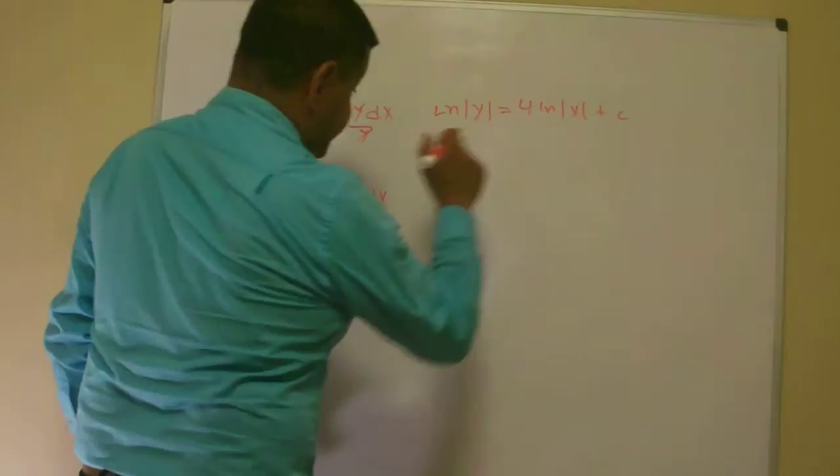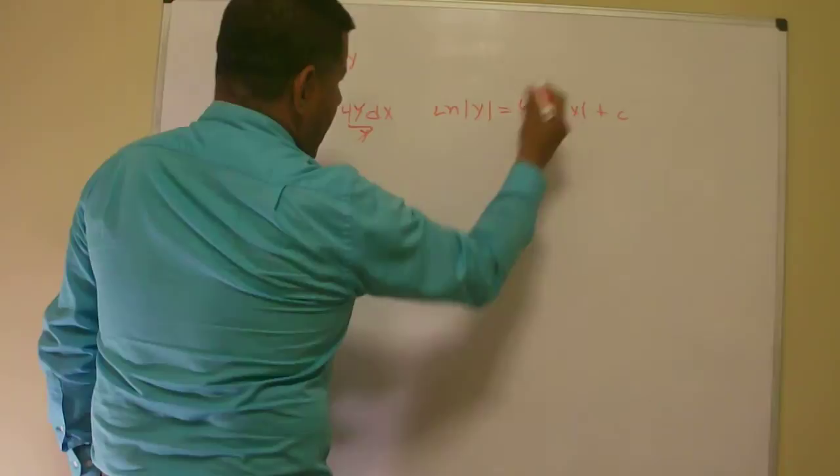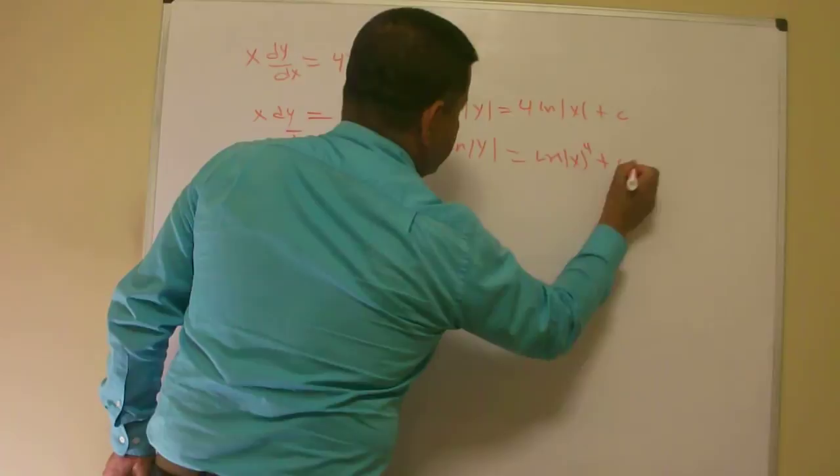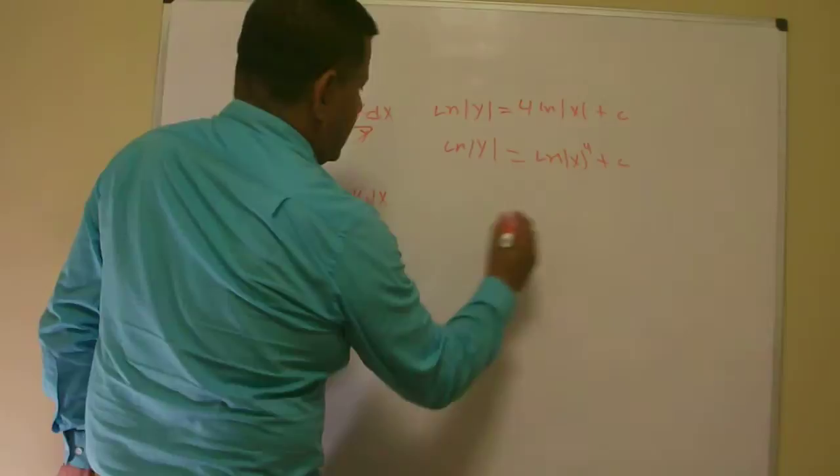So now, I want to send this 4 to the top, and I get ln absolute value of y is equal to ln absolute value of x to the 4th plus a constant. Now, I want to take the e on both sides.